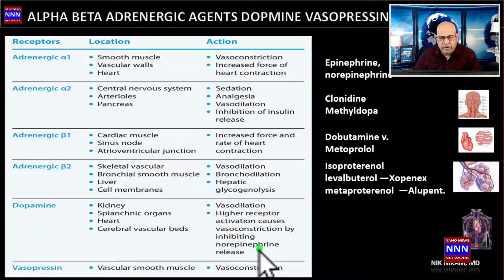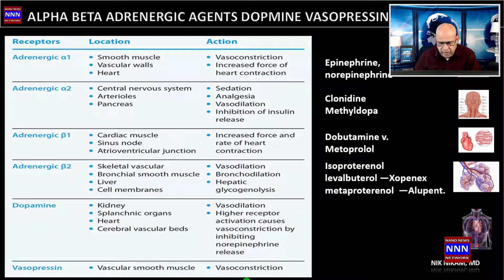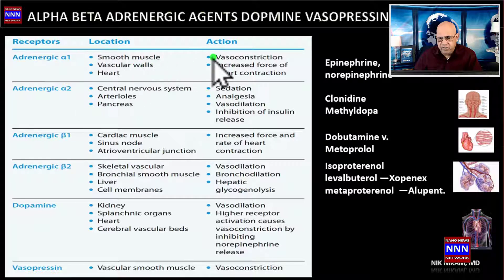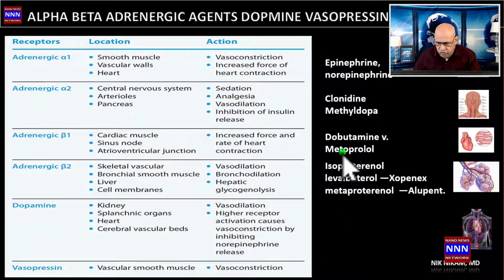As we go beyond 10 micrograms per kg per minute, the vasoconstrictive action of dopamine becomes predominant, leading to increased systemic vascular resistance and increased blood pressure. Vasopressin acts on vasopressin smooth muscle receptors, and its predominant action is vasoconstriction, which is used in patients with hypotension or shock.